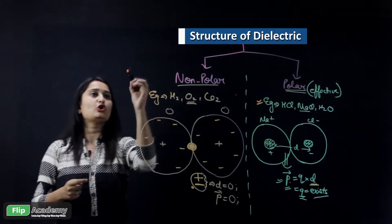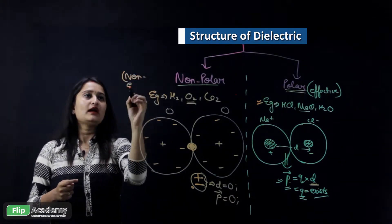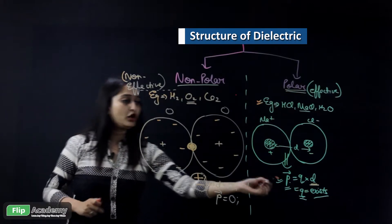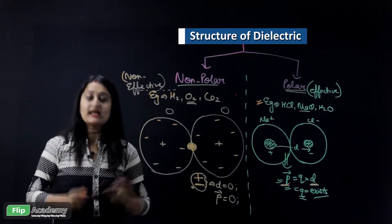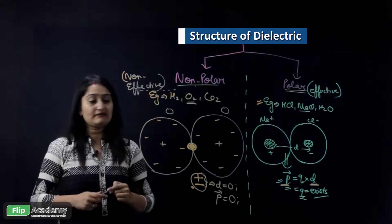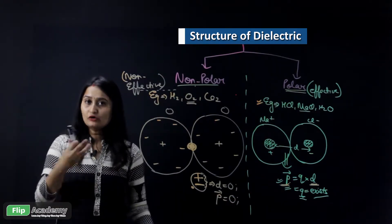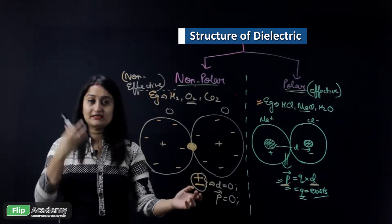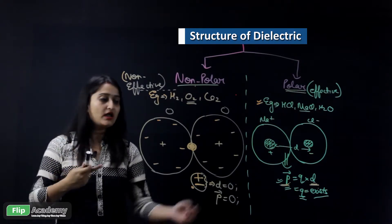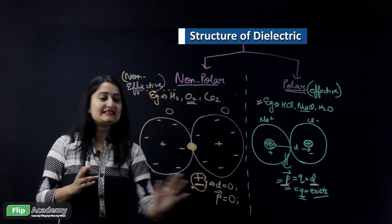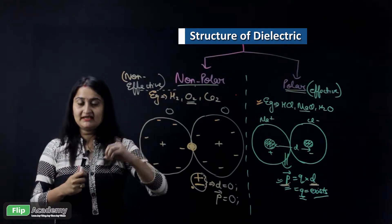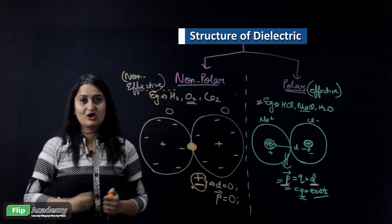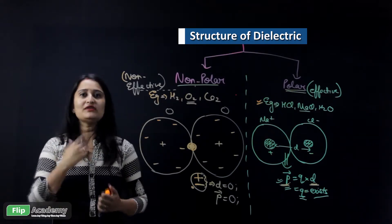Since the dipole moment is zero, non-polar dielectrics are non-effective. This is the key difference: polar dielectrics are effective because of a non-zero dipole moment, while in non-polar dielectrics the positive center and negative center coincide at the same point, giving zero dipole moment.